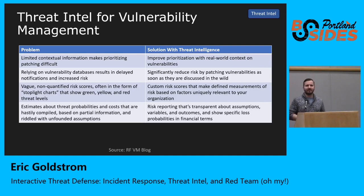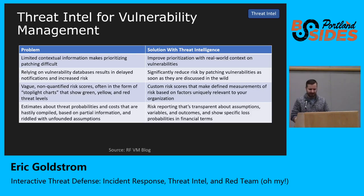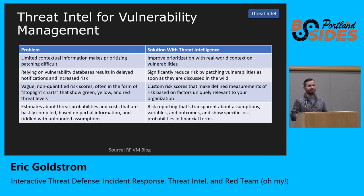One thing I really love about threat intelligence is its impact on vulnerability management. Prioritizing vulnerabilities is insanely difficult. Scanners give you scores based on NVD CVSS scores, vendor scoring, or Metasploit availability — but that's still not enough to prioritize hundreds or thousands of vulns day-to-day. Threat intel helps prioritize based on how many times something's been seen in the wild, whether it's being discussed on dark web forums, or whether exploit developers are building POCs. The Chinese NVD is also quicker to publish than the U.S. NVD, and threat intelligence providers help bridge that gap.